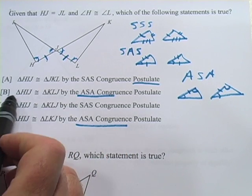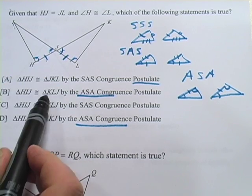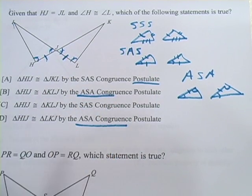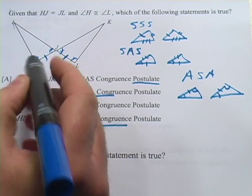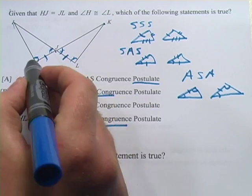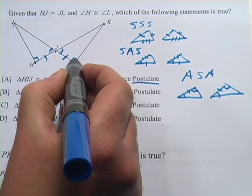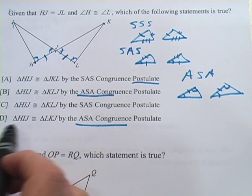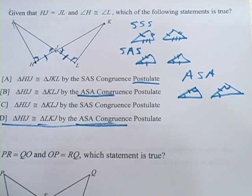The tricky part is that there are two answers that show angle-side-angle. Look at answer B: it says triangle HIJ and triangle KLJ. But it's important that the corresponding points are in the correct order. Points H and K do not correspond. If we wanted it to correspond correctly, we'd start with L and go up to K. And that's what answer D shows: HIJ and LKJ. So that's going to be our correct answer.